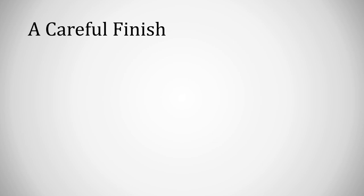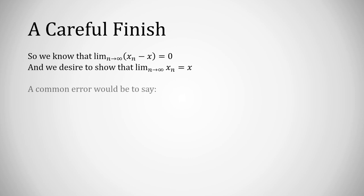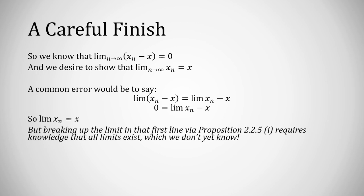Now we want to carefully finish this problem. We know that this limit is 0. We wish to show that the limit of xn is x. Now a very commonly seen error would be to say the limit of xn minus x is the limit of xn minus x. On the left, we know that's 0, and therefore the limit of xn is x.